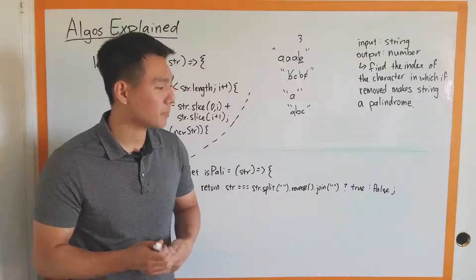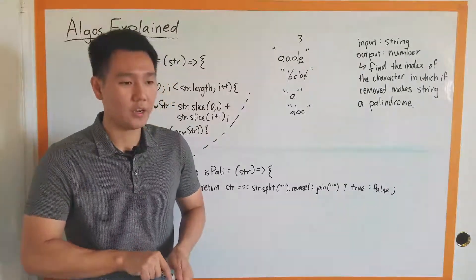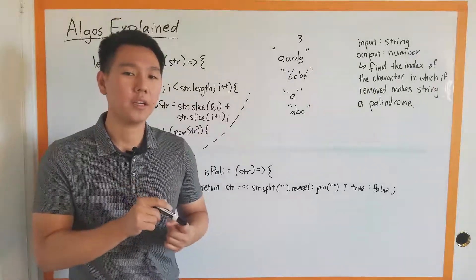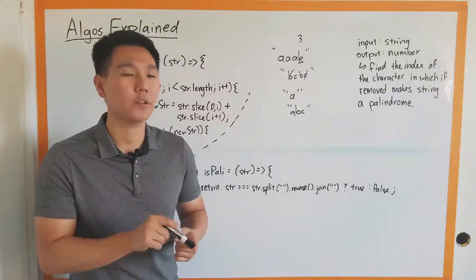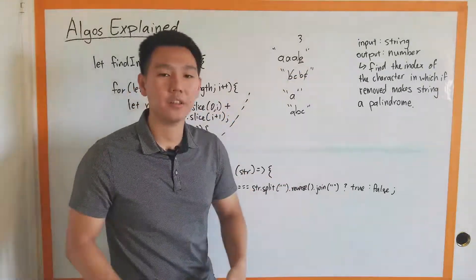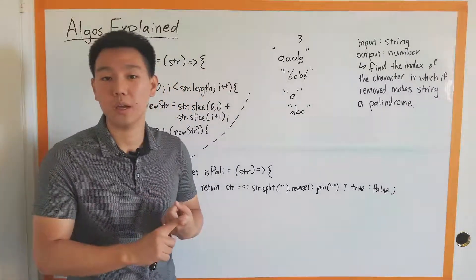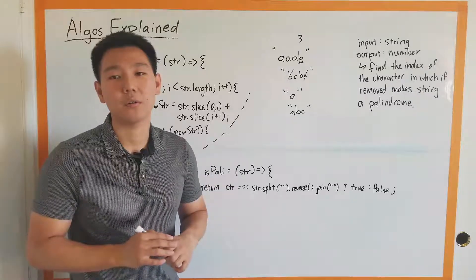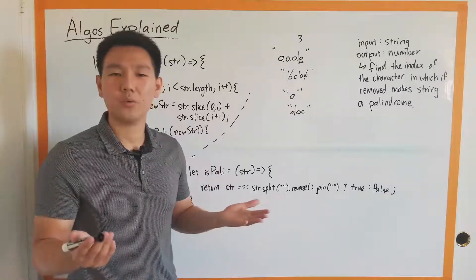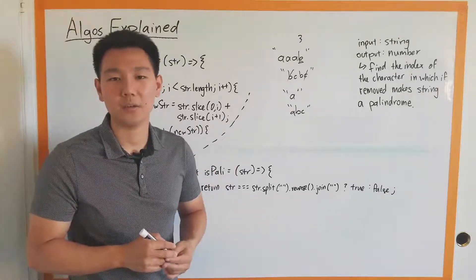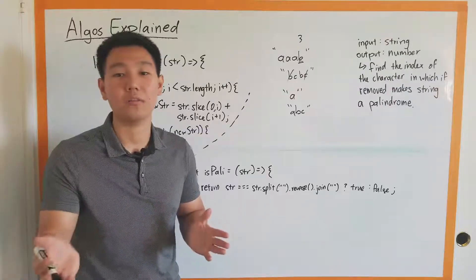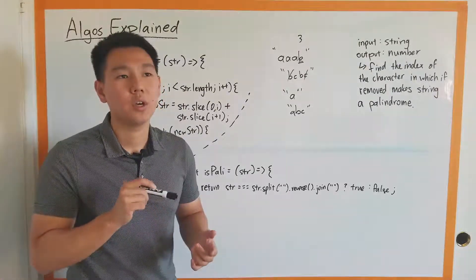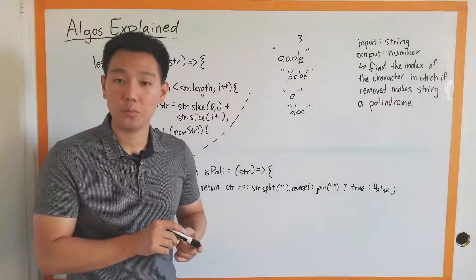We know we need to find the index. Finding an index in a string looks like using some kind of loop to iterate through every single character. We'll never find the index of the character if we don't iterate through all of them. So we'll have to iterate through using a for loop.